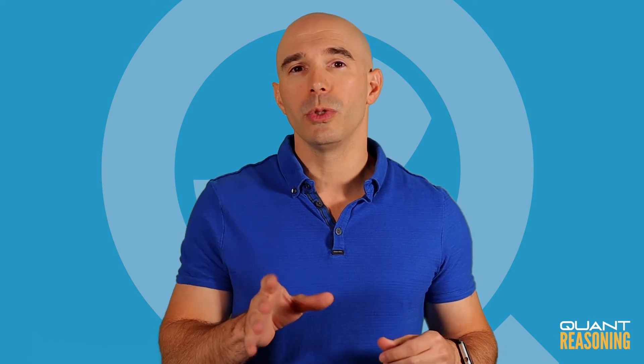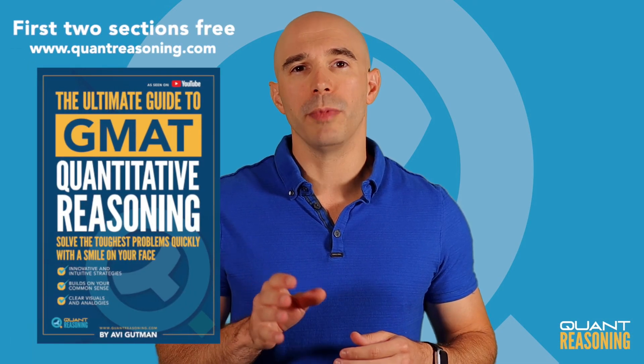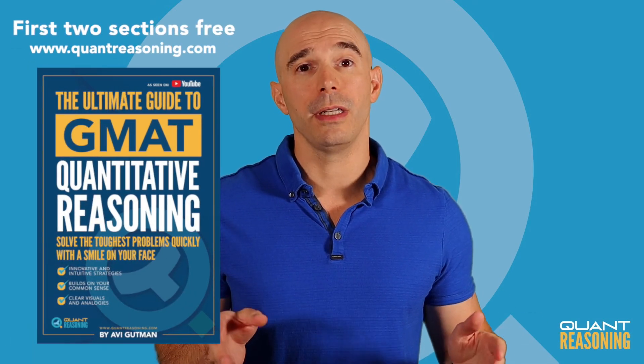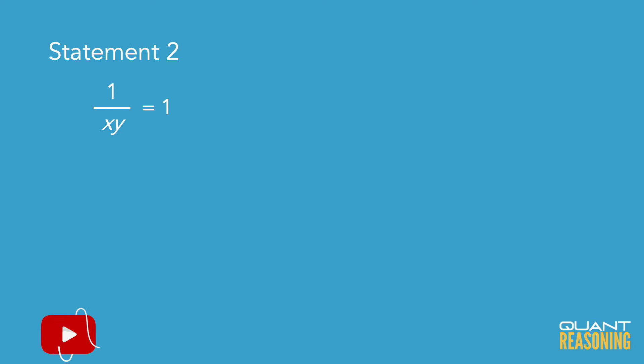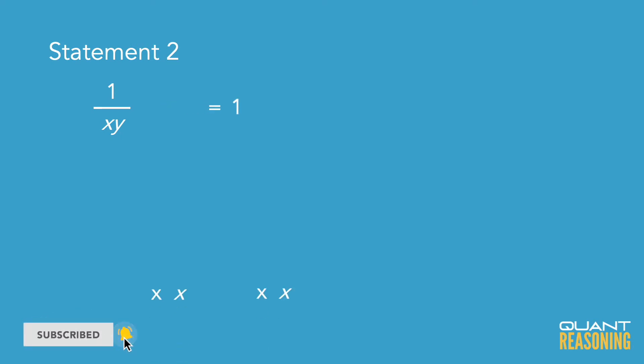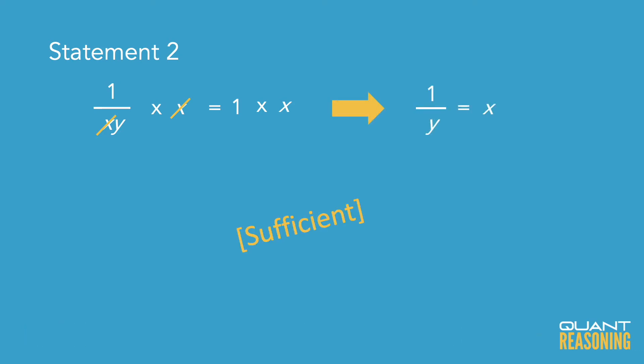I go into why that is in section two of my book, which you can actually read for free on quantreasoning.com. Now, the question is: do these statements imply that X and Y are reciprocals of one another? Going back to statement two, if we multiply both sides by X, we get exactly what the question was asking about. So it turns out that each of these statements is sufficient on its own, and the correct answer is D.